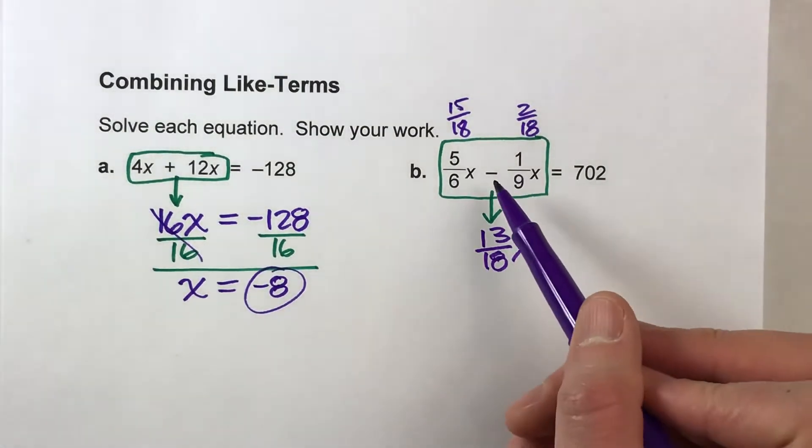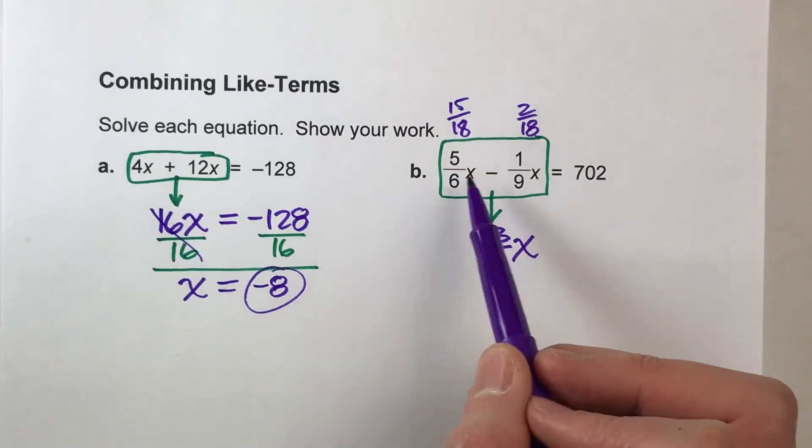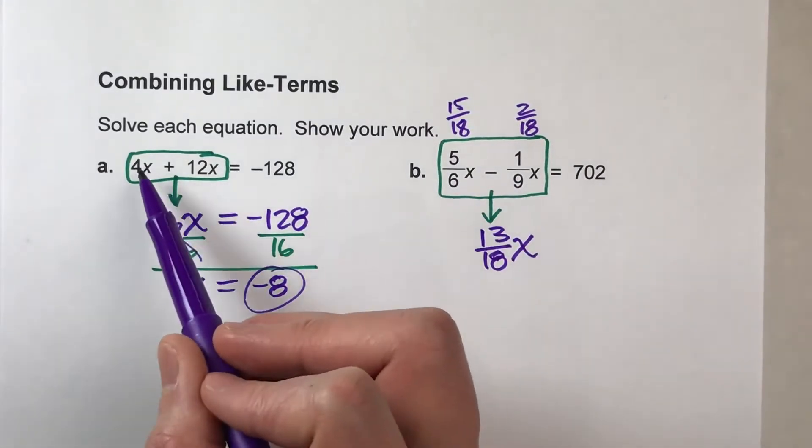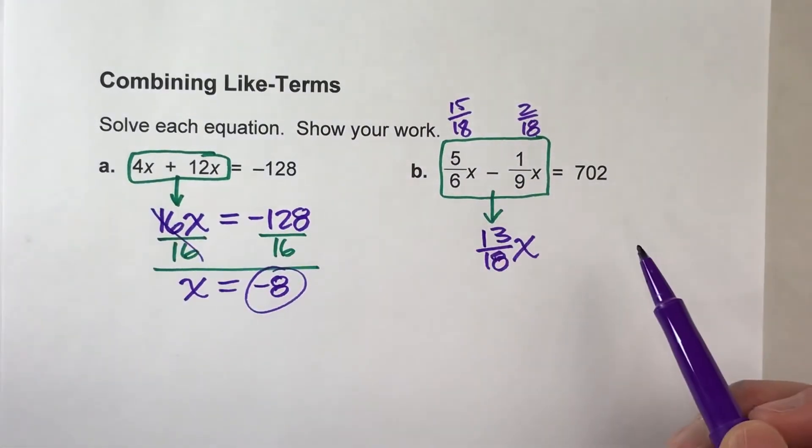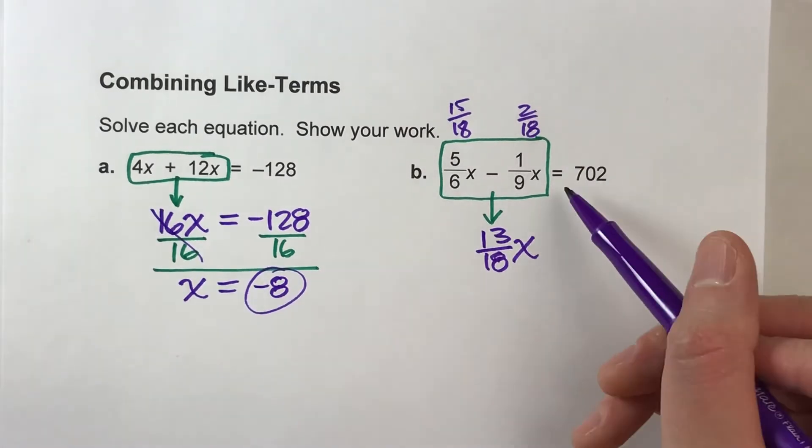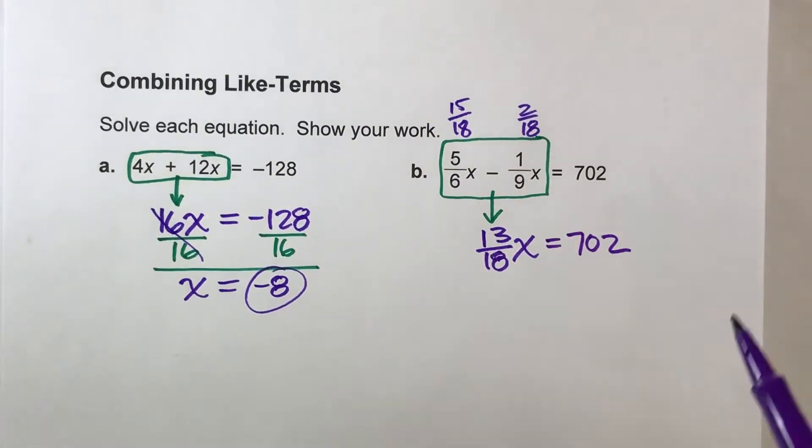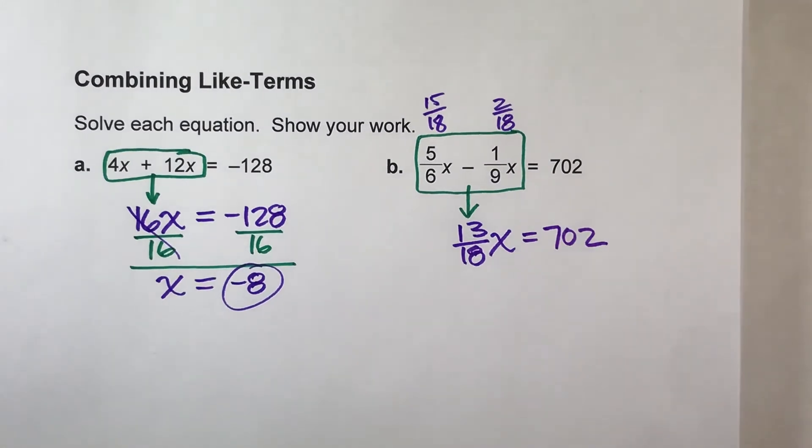So again, all I'm going to do here is combine my groups of x's just like I did over here. It's just a little bit harder with the fractions. Okay? I'll drop down my equals and drop down my 702. Now it's just a matter of solving the equation. We've got 13/18ths times x.